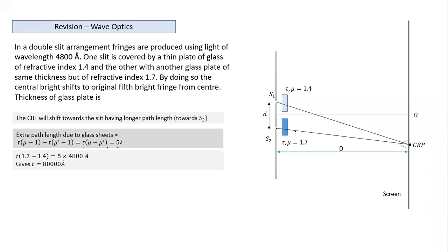Substituting the given values: t times 1.7 minus 1.4 equals 5 times lambda. With lambda equals 4800 Angstroms, we calculate t equals 80,000 Angstroms. That's the required thickness.